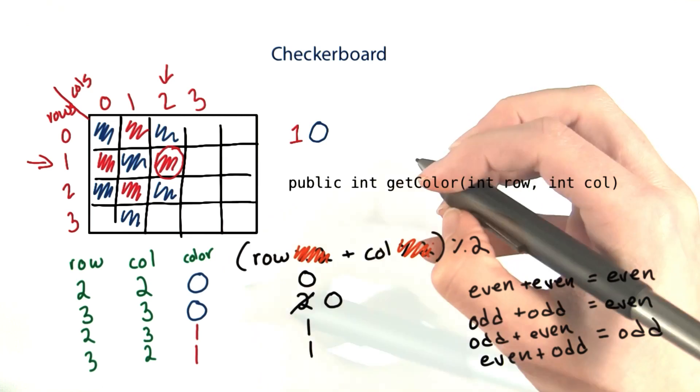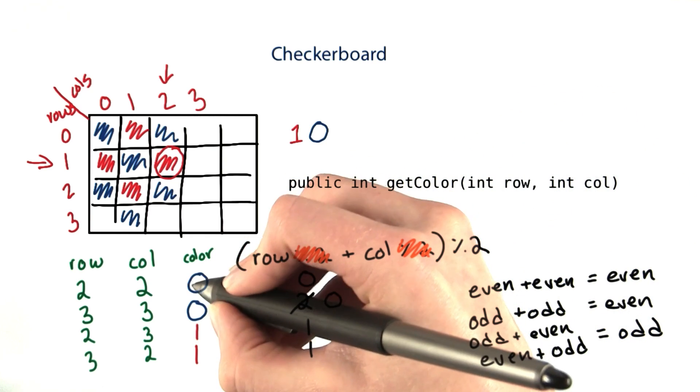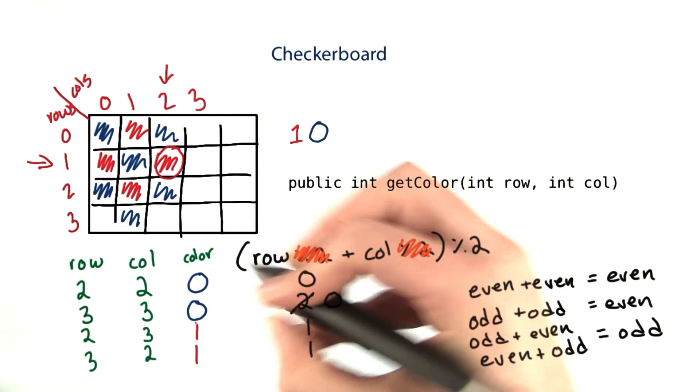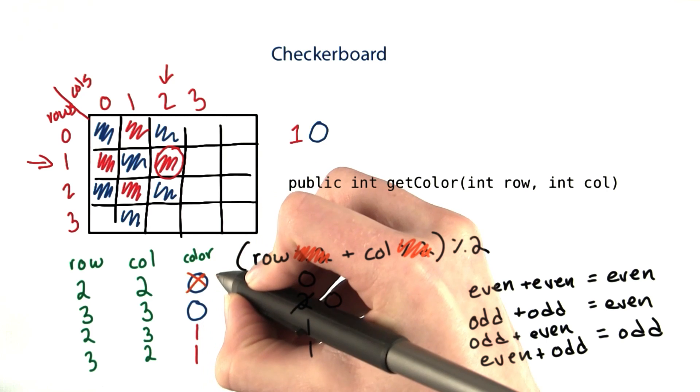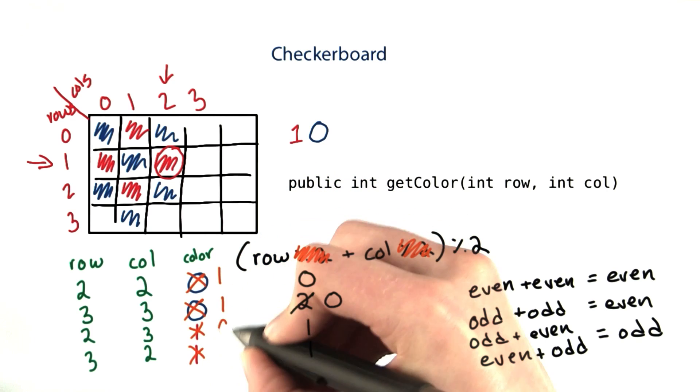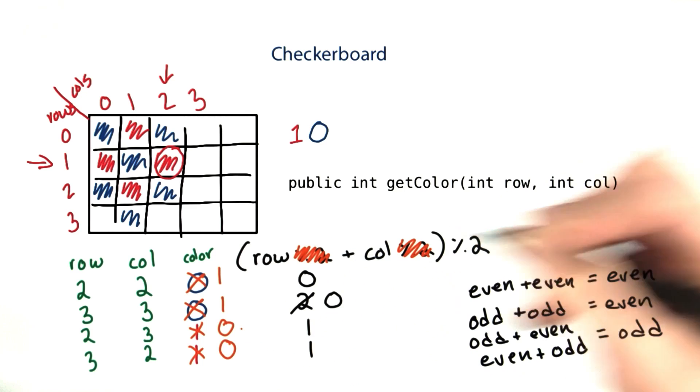As a bonus question, what if instead of returning 0 when they match and 1 when they don't match, I wanted to return 1 when they match and 0 when they don't match? How would you do that? I won't go over it, but it's something to think about.